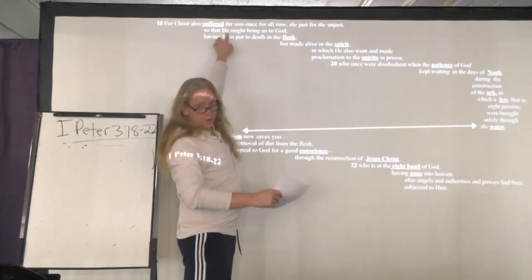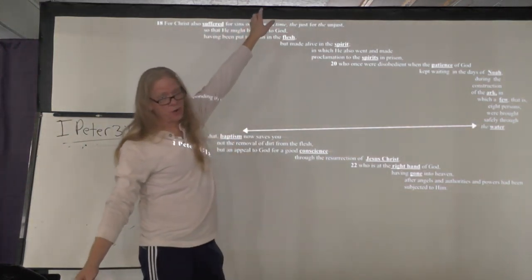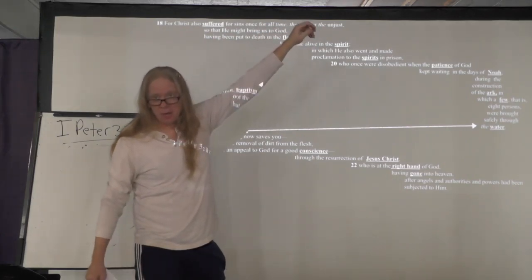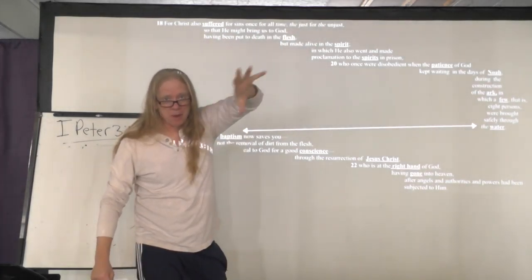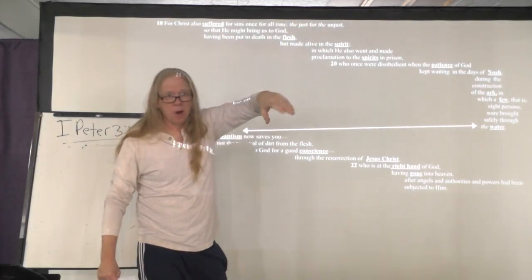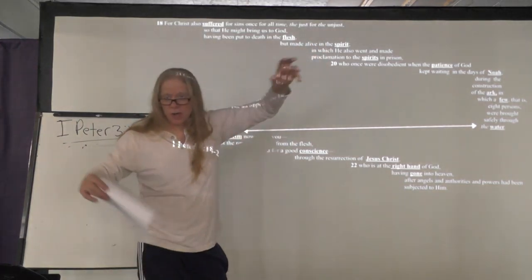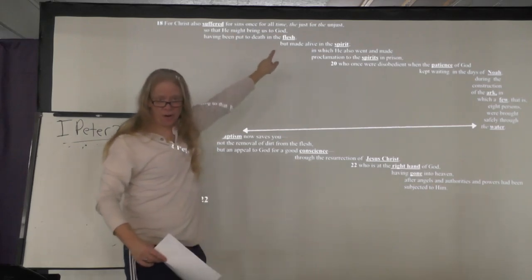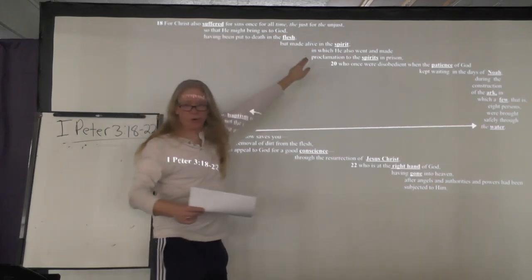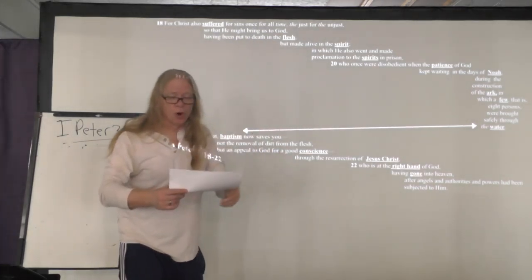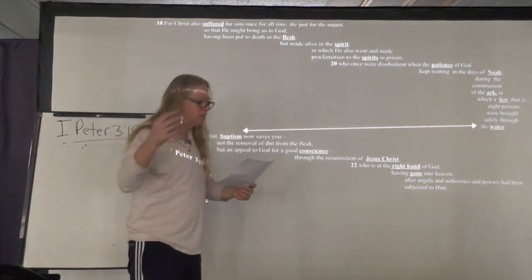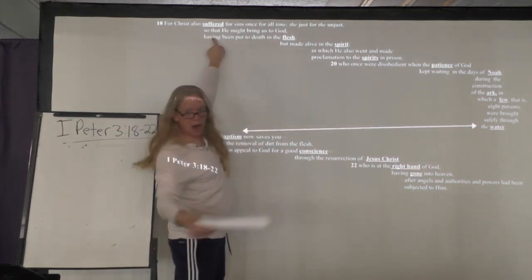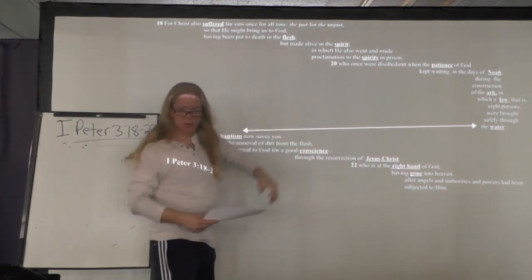God loves everybody and has given himself for everybody, even those who don't make the cut. None of us make the cut. So he suffered for us. Now notice, he suffered. So this next phrase develops that word suffered. For Christ suffered. Why? Why did he suffer? So that he might bring us to God. This is why Jesus died.